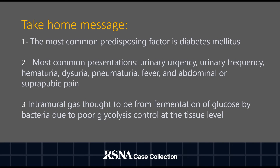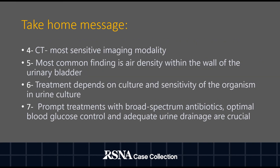Take-home message: the most common predisposing factor for emphysematous cystitis is diabetes. The most common presentations include urinary urgency, urinary frequency, hematuria, dysuria, pneumaturia, fever, and abdominal or suprapubic pain. Intramural gas stems from fermentation of glucose by bacteria due to poor glycolysis control at the tissue level. CT is the most sensitive imaging modality, with the most common finding being air density within the wall of the urinary bladder. Treatment depends on culture and sensitivity of the organism. Prompt treatment with broad-spectrum antibiotics, optimal blood glucose control, and adequate urine drainage are crucial.